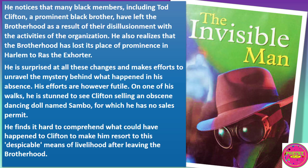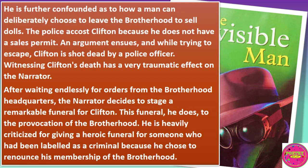On one of his walks, he is startled to see Clifton selling dancing dolls named Sambo, for which he has no sales permit. He finds it hard to comprehend what could have happened to Clifton to make him resort to this despicable means of livelihood after leaving the Brotherhood. He is further confounded as to how a man can deliberately choose to leave the Brotherhood to sell dolls.